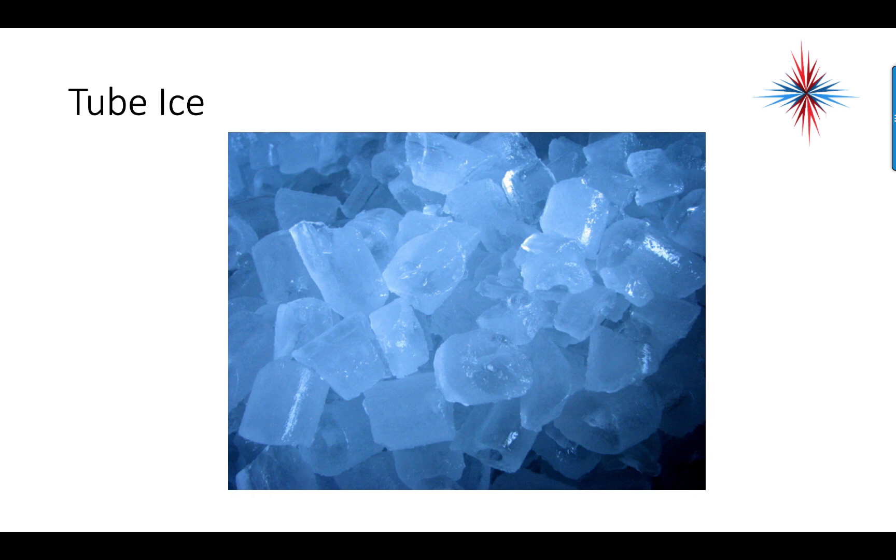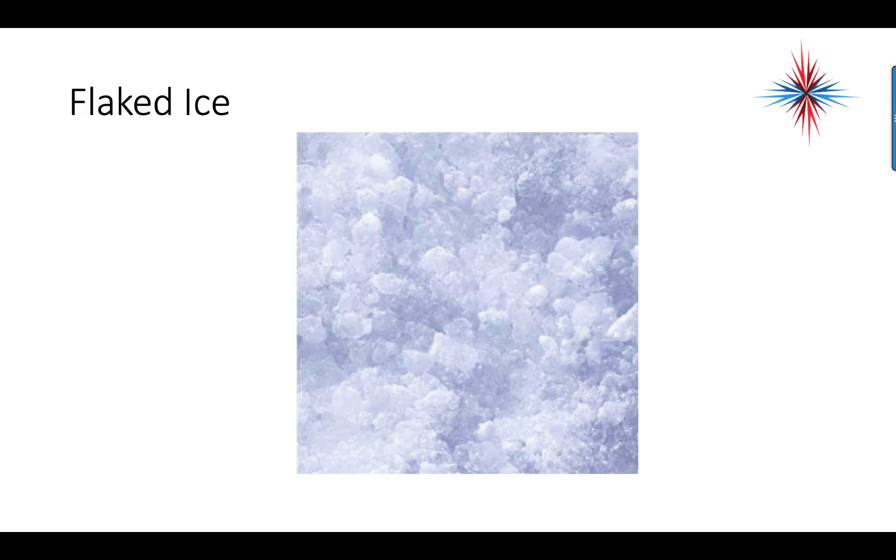This is an example of tube ice. If you look at the picture closely, it looks like cut pieces of little tubes. Flaked ice is another manufacturer. We take ice and we flake it, so that's used like in snow cones.